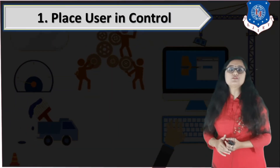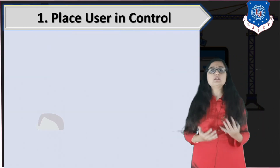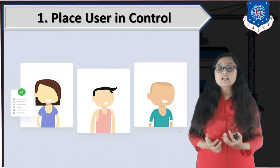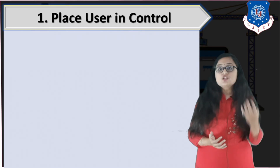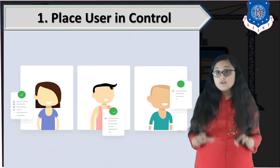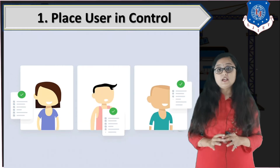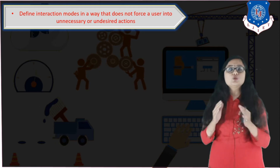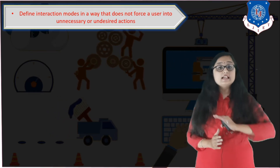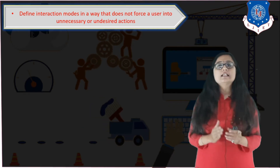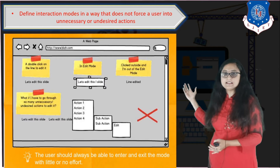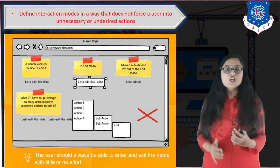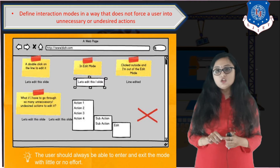The first golden rule for user interface design is: place the user in control. This means that if a user is interacting with your system, the user wants to control the computer — not be controlled by it. Everything on the website or web application must be in control of the user. The first sub-point is to define interaction modes in a way that does not force a user into unnecessary or undesired actions. For example, if you want something in editable mode, the best way is to click or double-click on that particular component or element.